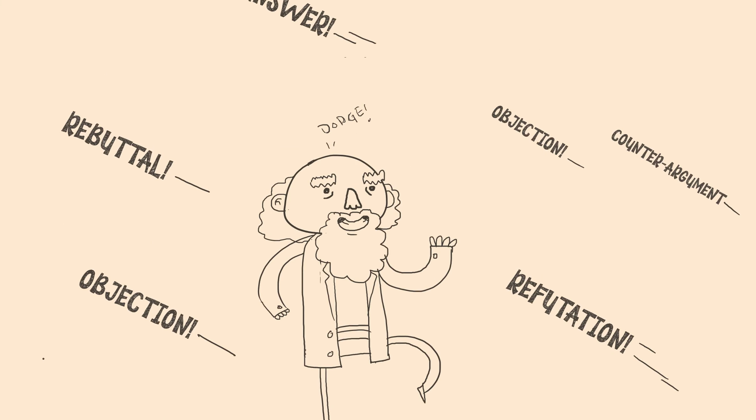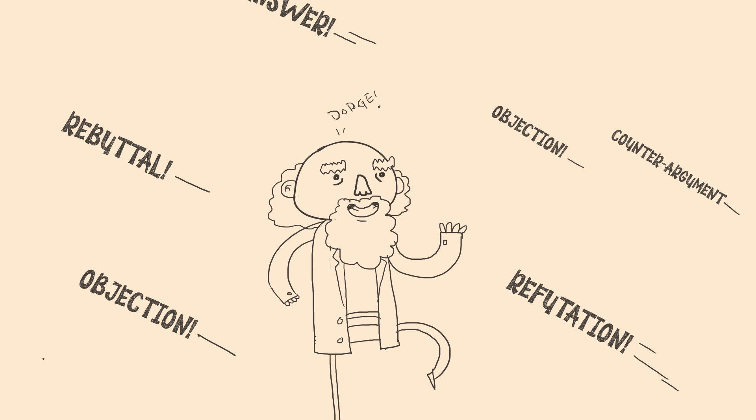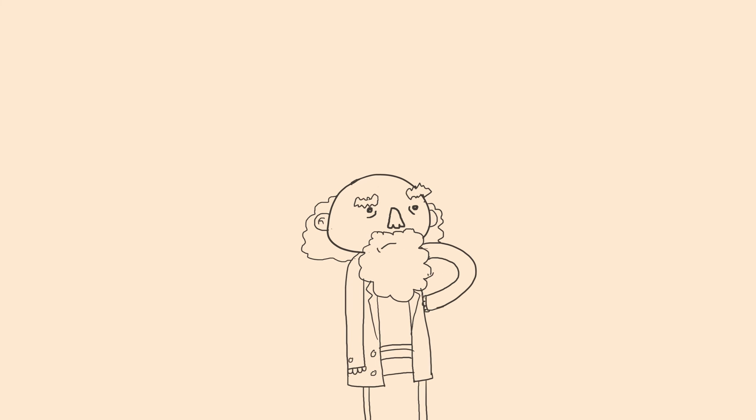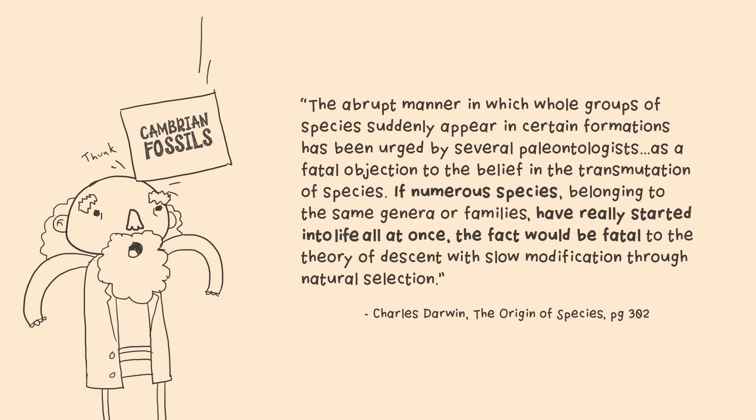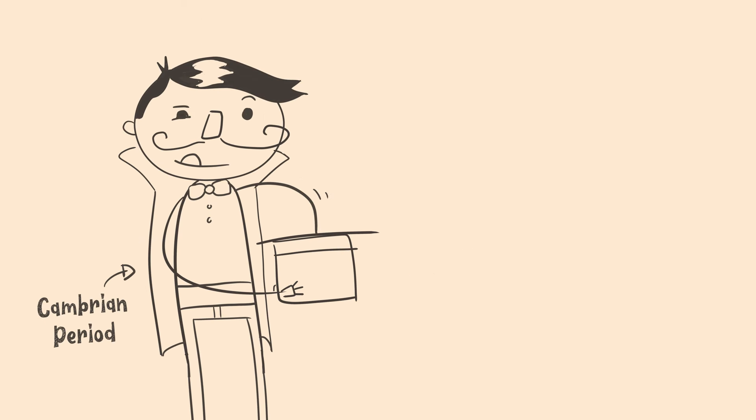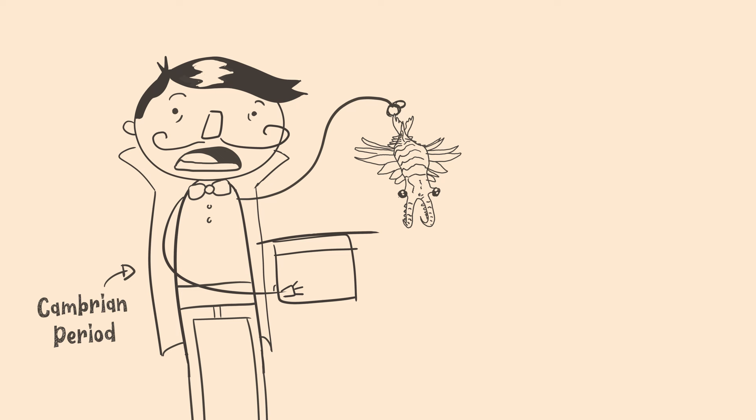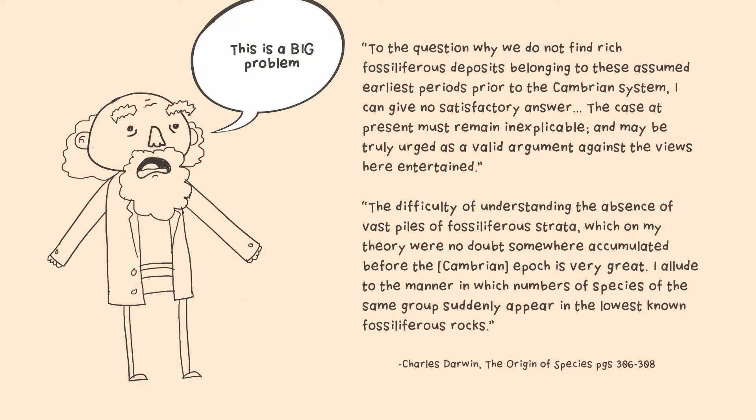Charles pretty well anticipated and answered most objections that were posed to his theory in The Origin of Species, but had some serious doubts about one in particular, the Cambrian fossils. Darwin expected very gradual change in animals and thus a smooth succession of fossils, but what the fossils showed was the opposite. There was a sudden appearance of wild new animals out of nowhere and they remained essentially unchanged throughout the fossil record. This is a big problem.